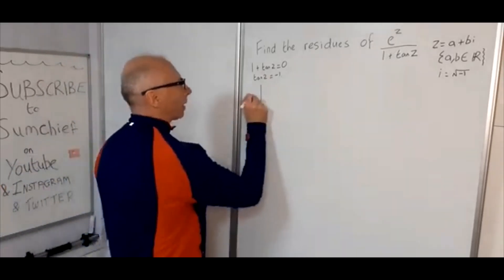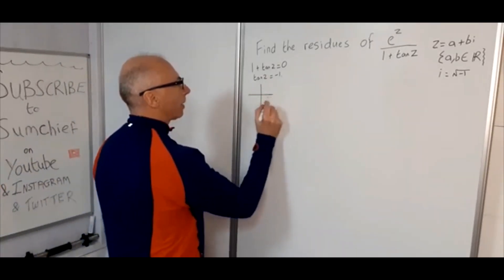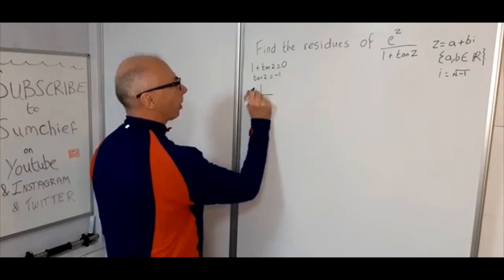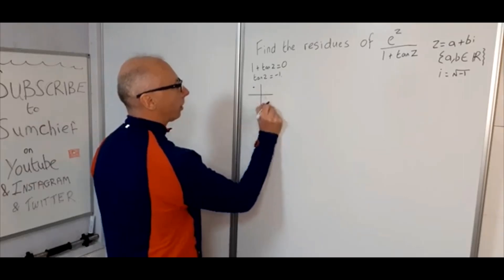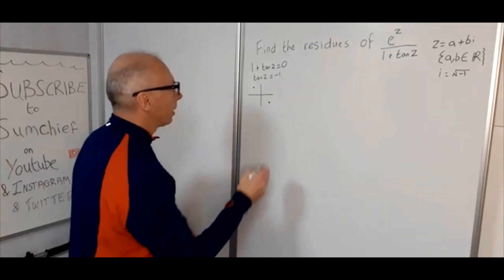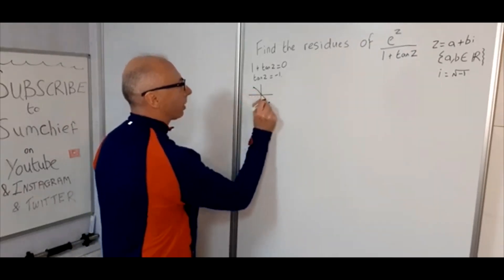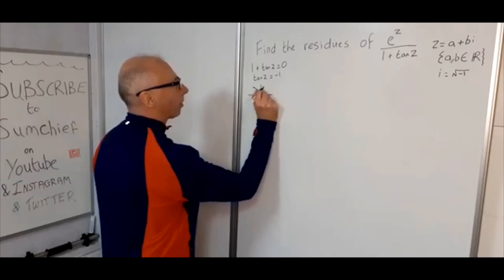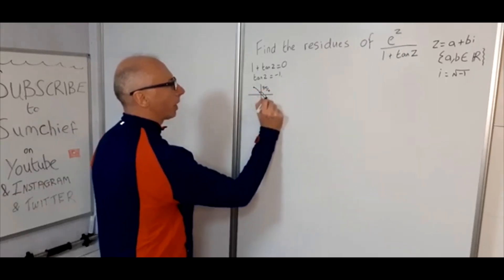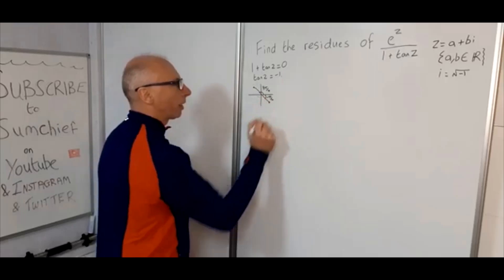So if you look at the complex plane, tan(z) is equal to minus 1 at this point here and also at this point here. So these points are going to be 3π over 4, and this point here is minus π over 4.